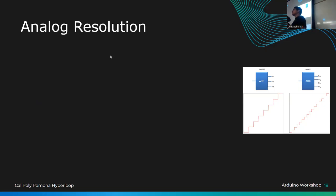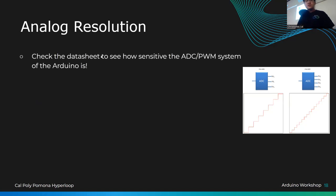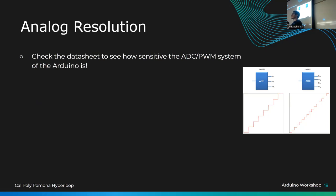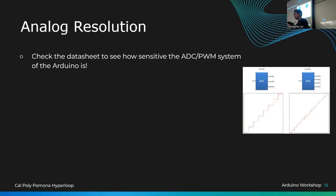Resolution is how sensitive your detection method is. Always check the datasheet for your board's ADC and PWM bit depth. The Arduino Pro Micro has a 10-bit ADC — returning values from 0 to 1023 — and an 8-bit PWM — writing values from 0 to 255. You don't need to memorize these; checking the datasheet will tell you. You can increase resolution but that involves timers and bit shifting — more advanced topics.